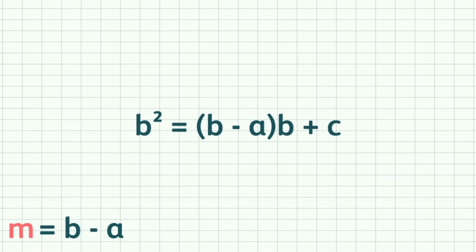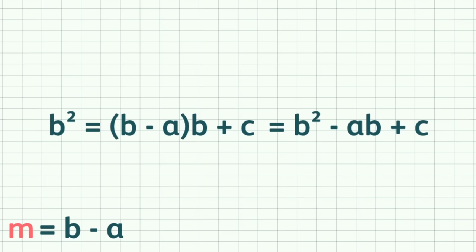So, the slope is b minus a. Having the slope, we can plug one of our points into the equation and find out what the constant c should be.